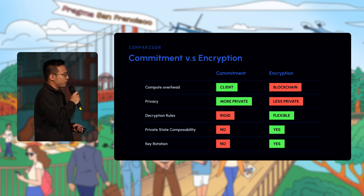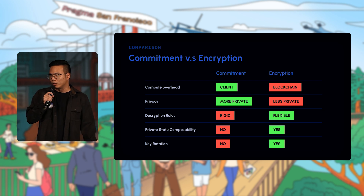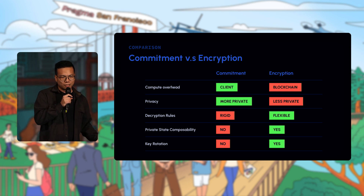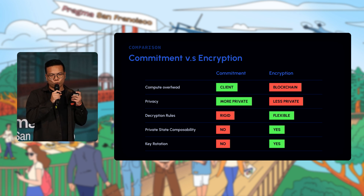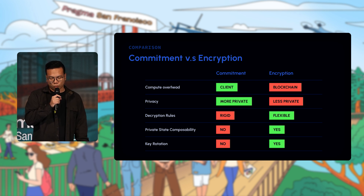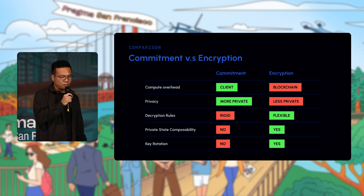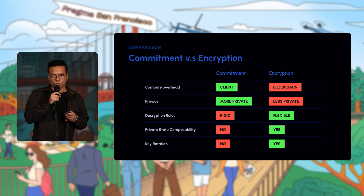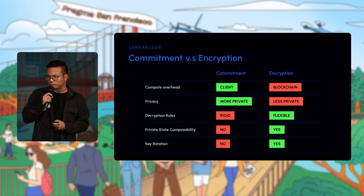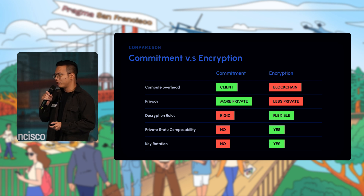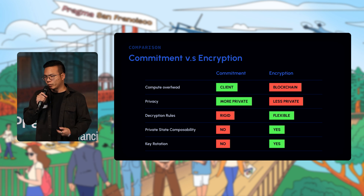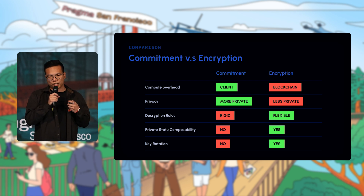Why is FHE interesting as a confidentiality solution? There have been legacy solutions using ZK — we can call them commitment-based approaches — versus FHE, which is an encryption-based approach. In a commitment-based solution, the user generates a ZK proof on the client side, so the compute overhead is offloaded off-chain. With encryption-based systems, the blockchain does all the state transitions for every user.